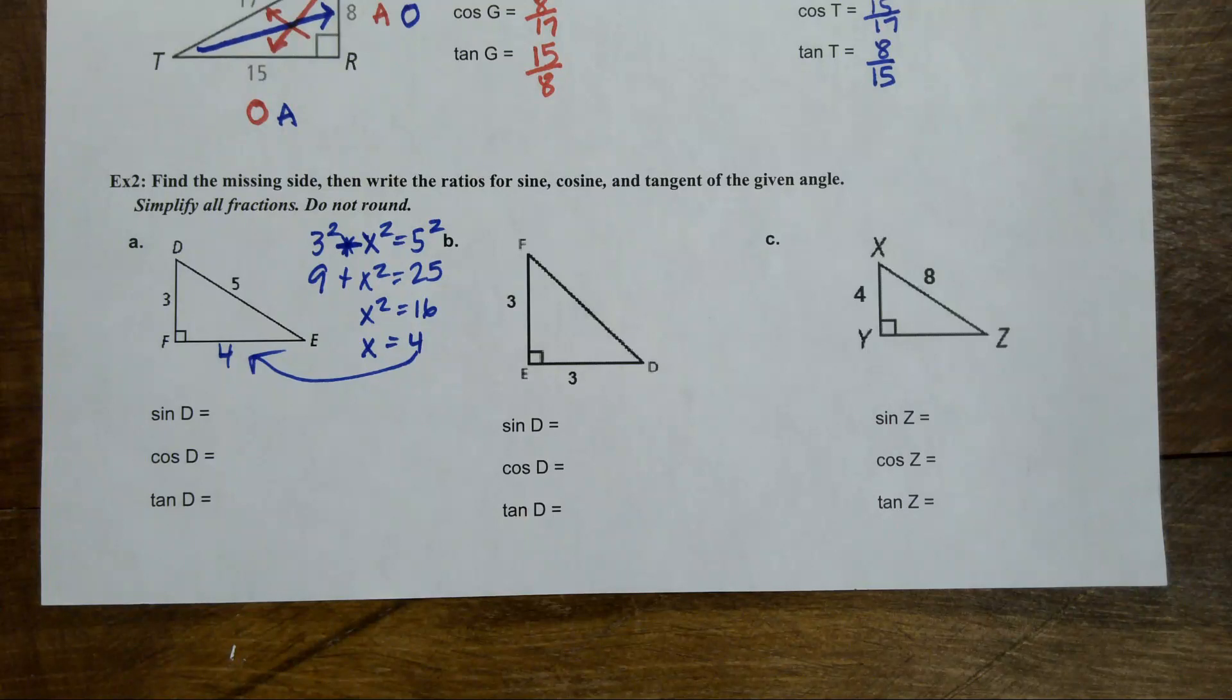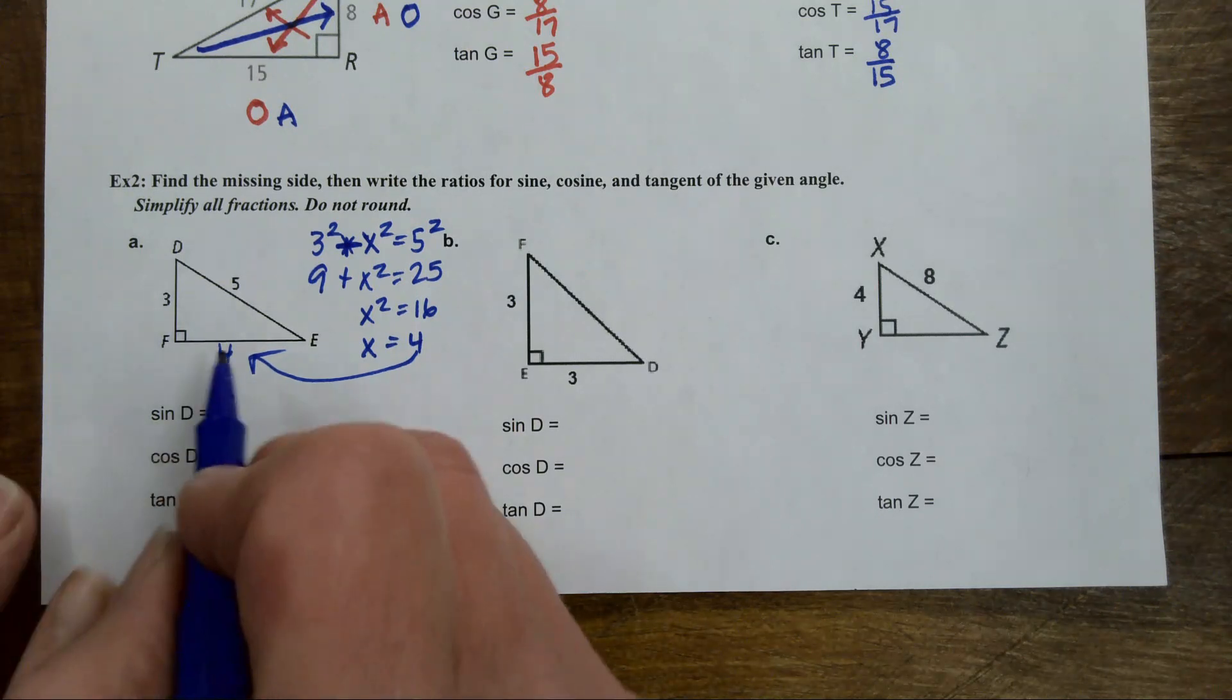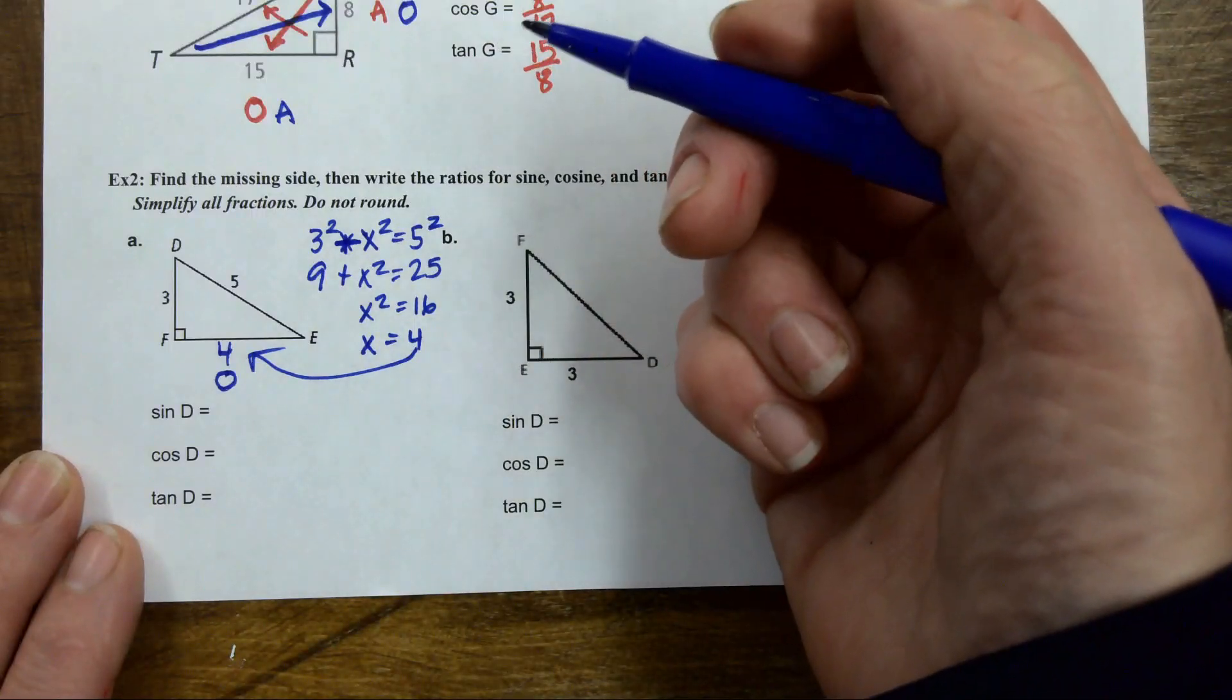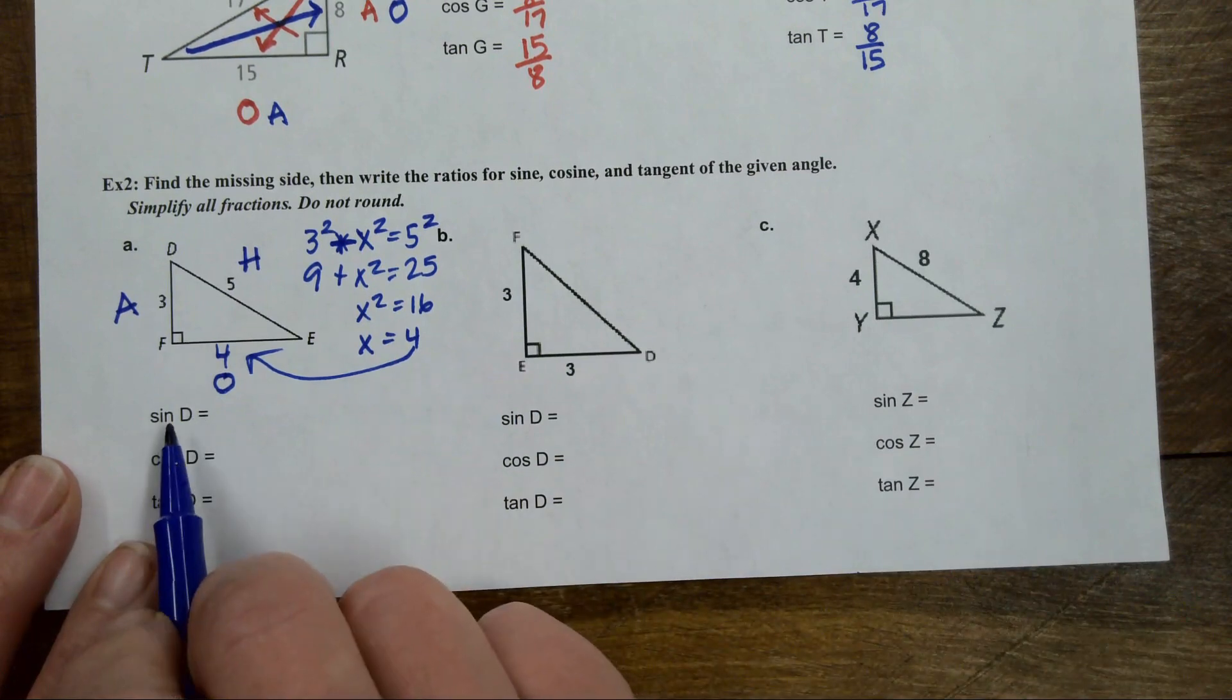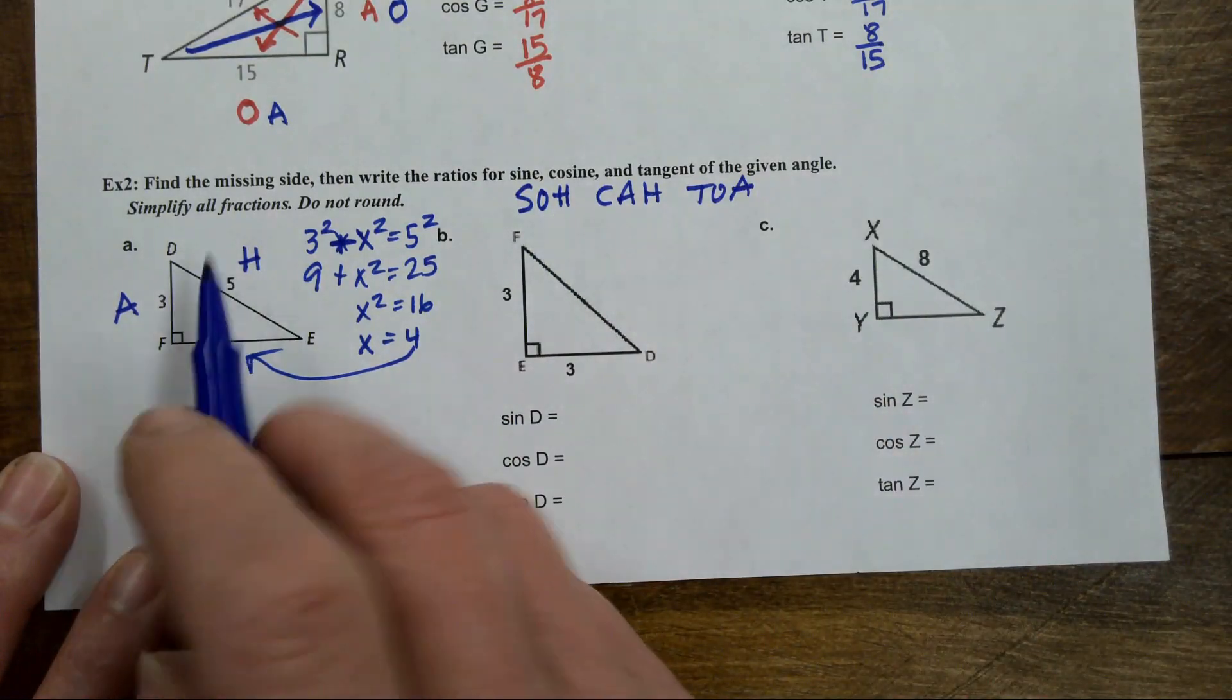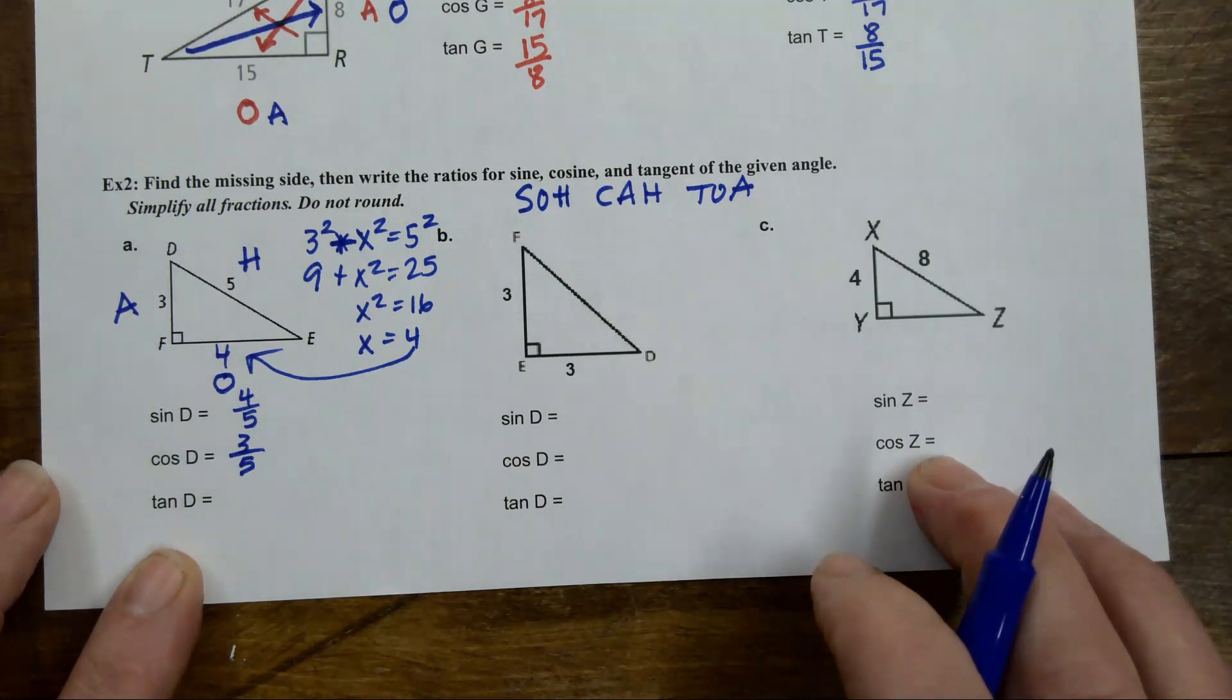Now that I have the missing side labeled, I'm interested in D, angle D. So what side is opposite angle D? 4. What side is the hypotenuse in this triangle? Perfect. And then the remaining side is the adjacent. So let's set up the sine. Sine is opposite over hypotenuse. So it's SOH CAH TOA. Sine is opposite over hypotenuse. I write it as a fraction 4 fifths. What's the cosine? 3 fifths. And what's the tangent? 4 over 3. Nice job.